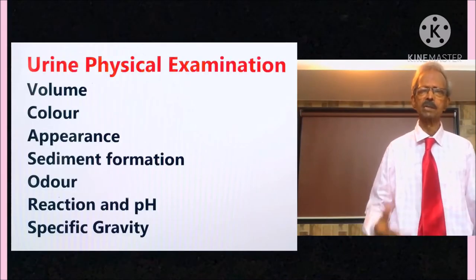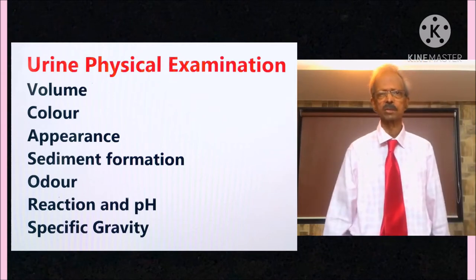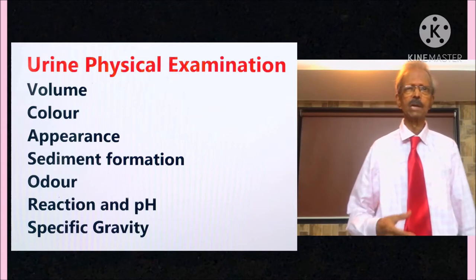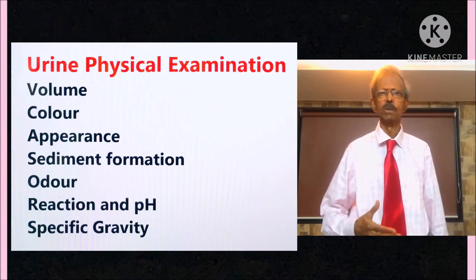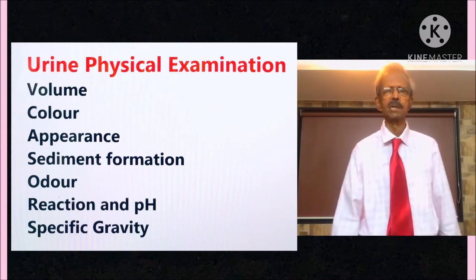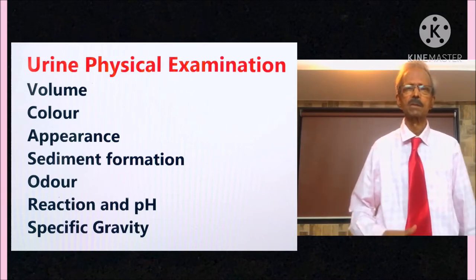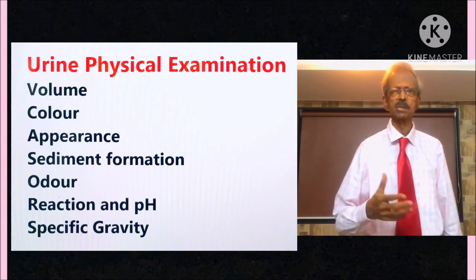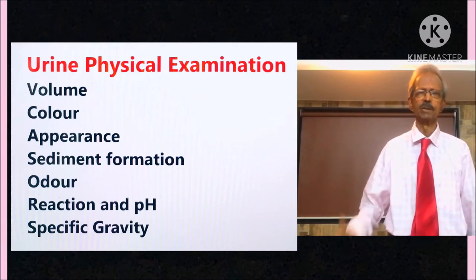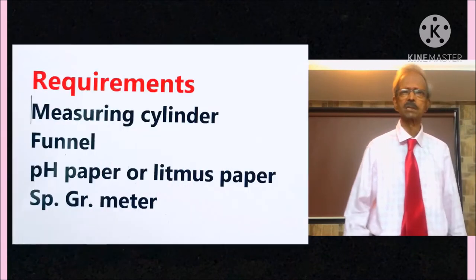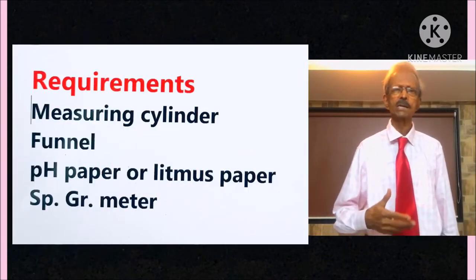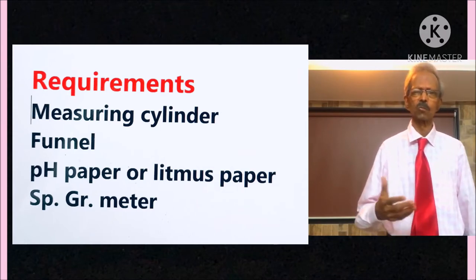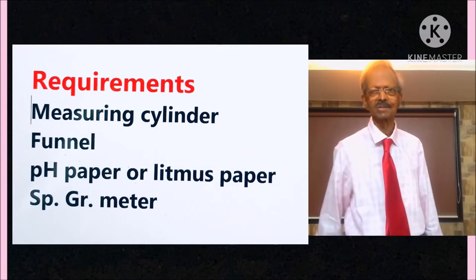Now, we will discuss about the first part of routine urine examination, that is physical examination. For that, following points are considered: volume, color, appearance, sediment formation, odor, reaction, pH and specific gravity. Following are the requirements: measuring cylinder, funnel, pH paper or litmus paper, and specific gravity meter.